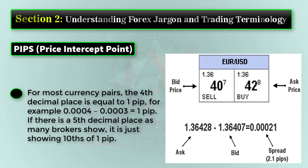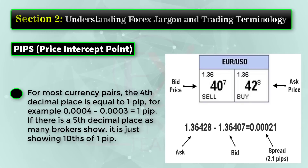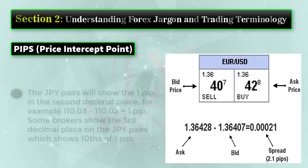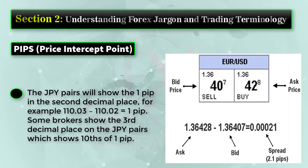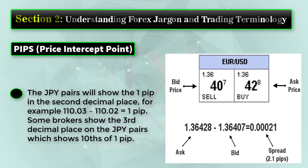For most currency pairs, the fourth decimal place is equal to 1 pip. For example, 0.0004 minus 0.0003 equals 1 pip. If there is a fifth decimal place, as many brokers show, it is just showing tenths of 1 pip. The JPY pairs show 1 pip in the second decimal place — for example, 110.03 minus 110.02 equals 1 pip. Some brokers show the third decimal place on JPY pairs, which shows tenths of 1 pip.